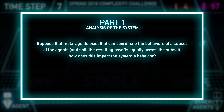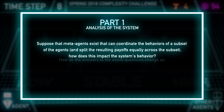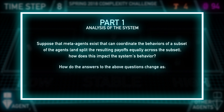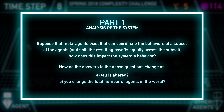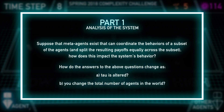Suppose that meta-agents can coordinate the behaviors of a subset of agents and split the resulting payoffs equally across that subset. How does this impact the system's behavior? And how do the answers to the above questions change as tau is altered and as you change the total number of agents in the world?